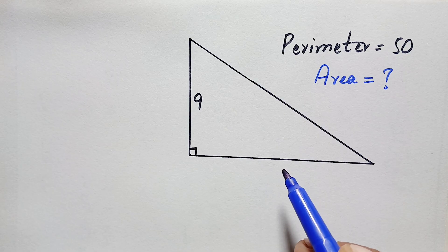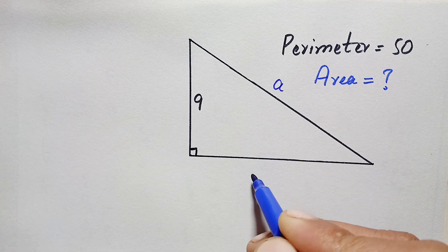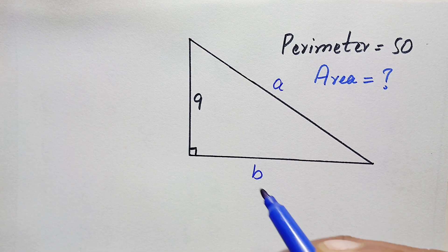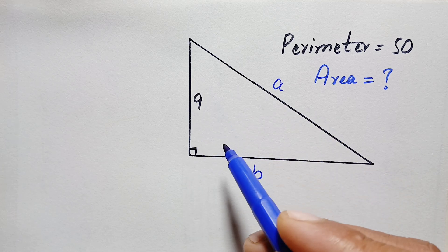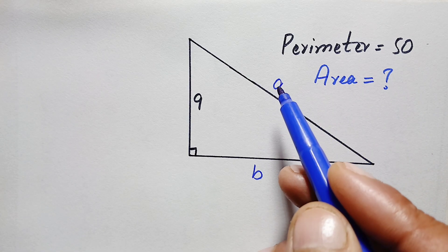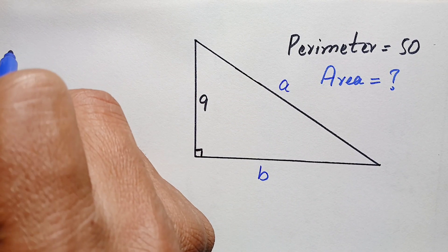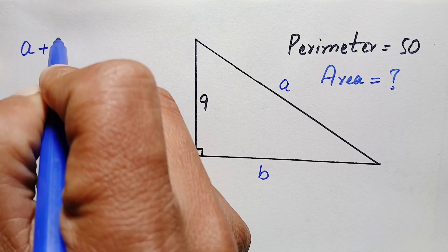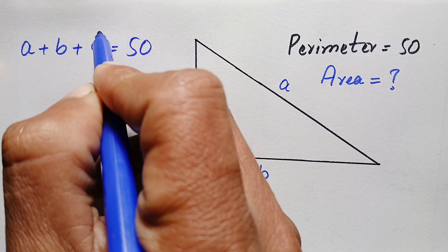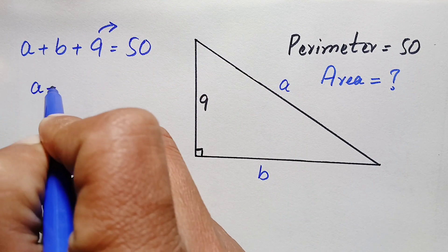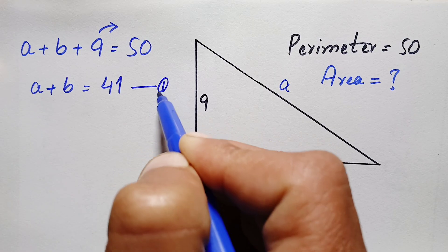To find out the area of this right angle triangle, first we will try to find out its other two sides. Suppose this side of the triangle is A and this side is B. As we know that the perimeter of any closed figure is the sum of all its sides. So this right angle triangle has perimeter 15 units, therefore A plus B plus 9 equals 15. From this we can write A plus B is equal to 15 minus 9, which is 6. Let us suppose this is equation number one.